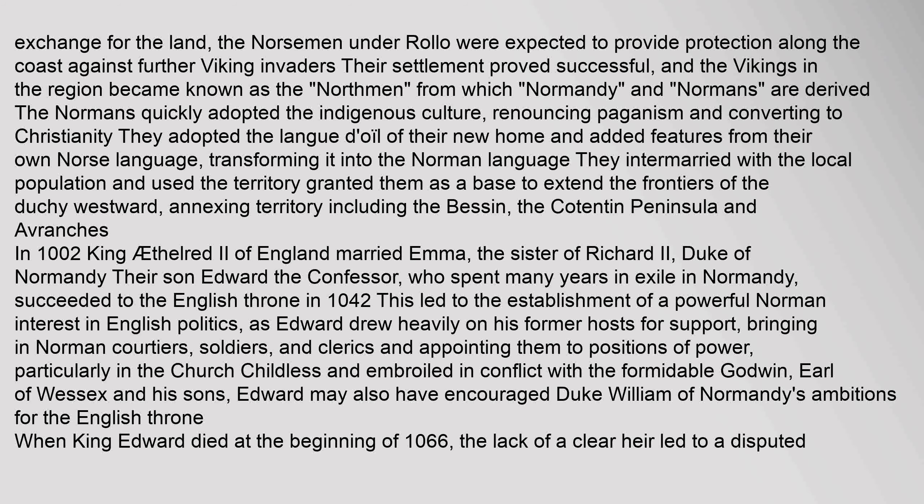They adopted the local language and added features from their own Norse language, transforming it into the Norman language. They intermarried with the local population and used the territory granted them as a base to extend the frontiers of the Duchy westward, annexing territory including the Cotentin Peninsula and Avranches. In 1002, King Athelred II of England married Emma, the sister of Richard II, Duke of Normandy. Their son Edward the Confessor, who spent many years in exile in Normandy, succeeded to the English throne in 1042. This led to the establishment of a powerful Norman interest in English politics.